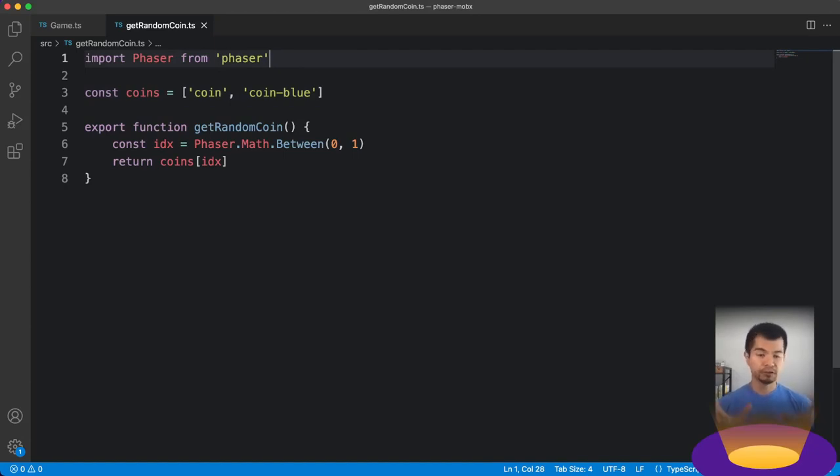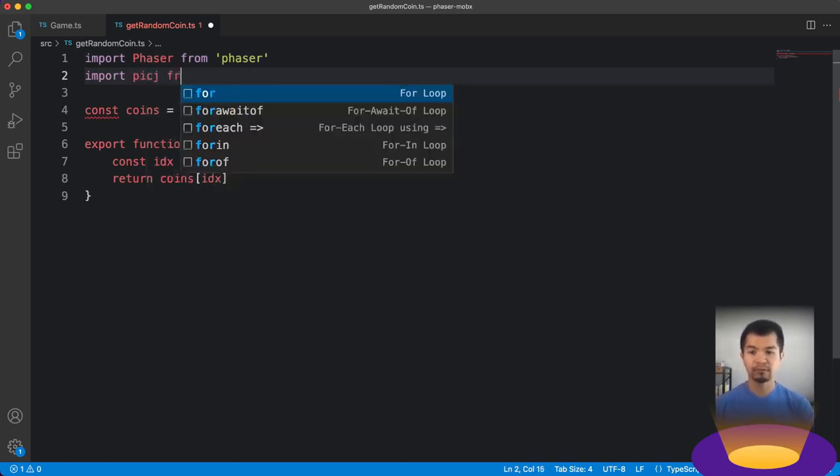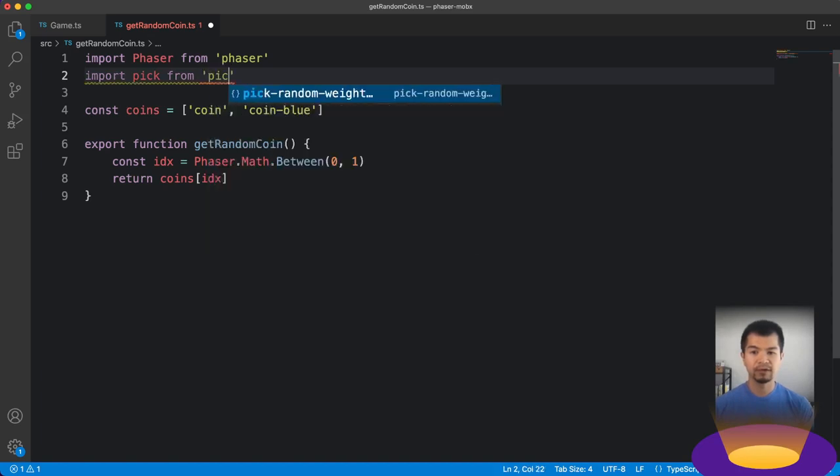All right, we're back in VS Code. So first thing we want to do is actually import the pick-random-weighted library. So it's going to be pick from pick-random-weighted. Now, if you haven't installed this library yet, you're going to do npm install pick-random-weighted or yarn add pick-random-weighted. We'll put a link in the description box below to this library's GitHub repository so you can look up more information about it.